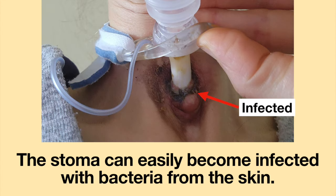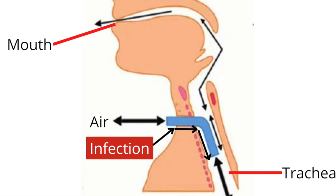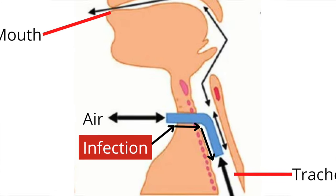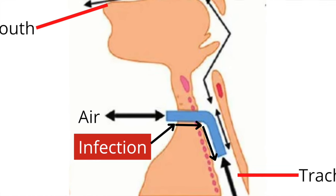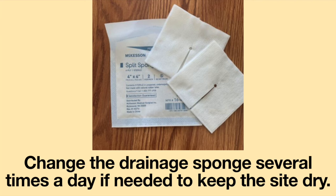The stoma can easily become infected with bacteria from the skin. With the constant movement of the tracheostomy tube, bacteria on the skin can migrate into the respiratory tract. Please clean around the tracheostomy tube at least once a day. If the person has a lot of drainage from his tracheostomy tube, please place a drainage sponge around it. Change the drainage sponge several times a day if needed to keep the site dry.